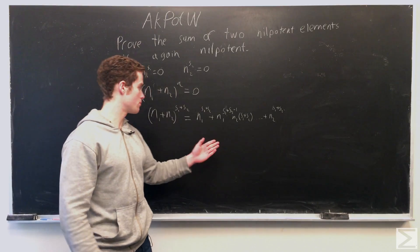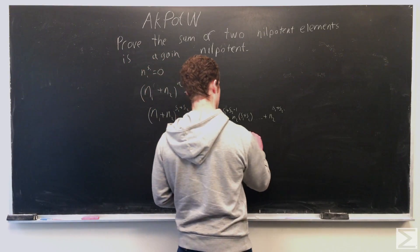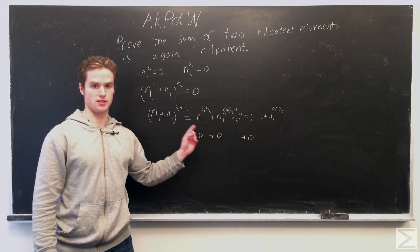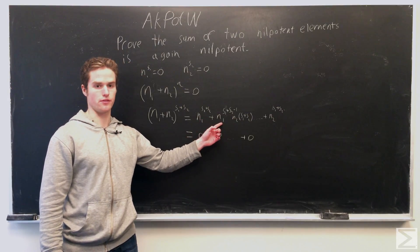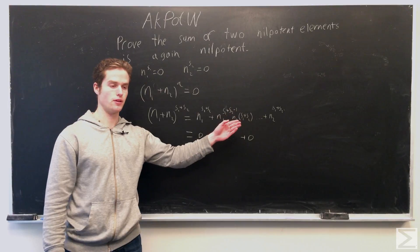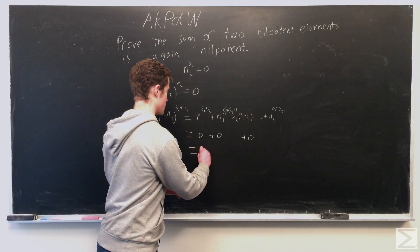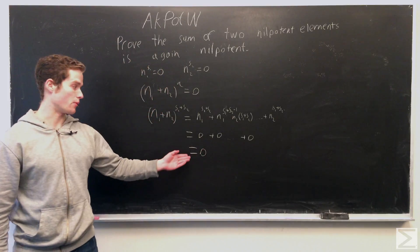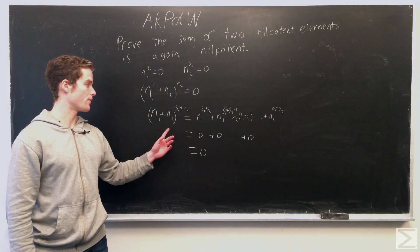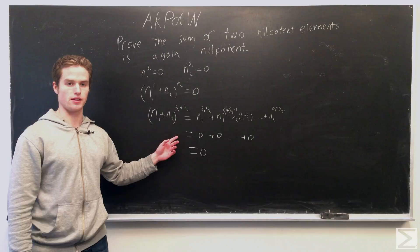And so we know that each of these terms has to be zero, because at least one of the n1 to the power or n2 to the power is going to be zero. And so adding up all these, we get zero. And this proves that n1 plus n2 is again nilpotent in our commutative ring.